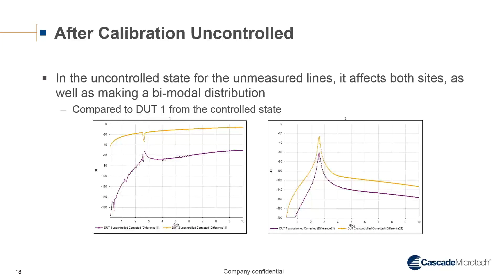Now looking at the uncontrolled scenario, here, DUT1 was being calibrated while DUT2 was in some unknown state, and then we used that to create the calibration error terms. You can see you actually get a bimodal distribution in the final measurements between site 1 and site 2. This indicates that there would need to be some amount of correlation between site 1 and site 2 in your test cell.